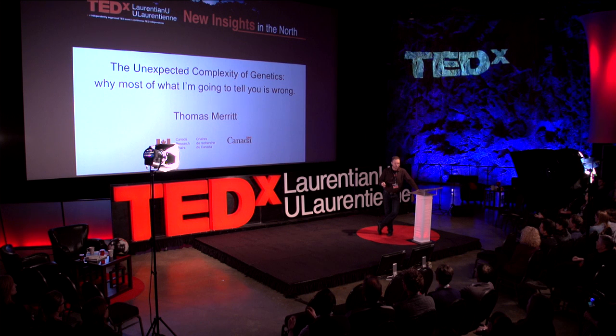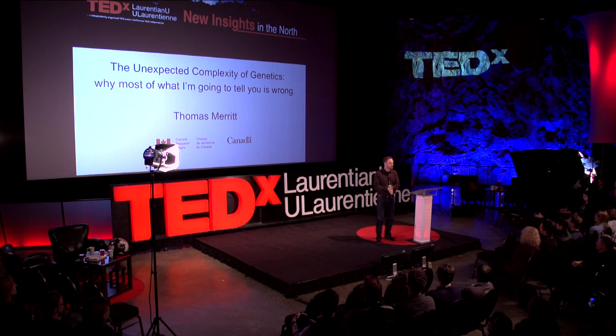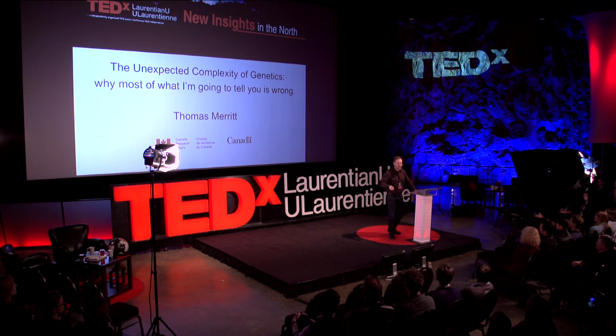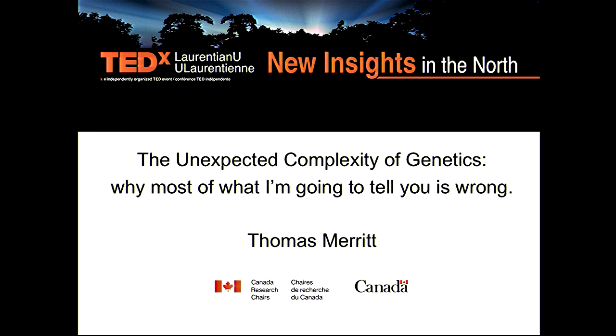In 2001, we published the first draft sequence of the human genome, and one of the first things that we found was that there were too few genes — a lot too few genes. Based on the complexity of us, we had estimated there would be about 100,000 packets of information, about 100,000 genes. And we found 25,000 genes. We were off by a factor of four. We knew we wouldn't get it exactly right, but we didn't think we'd be that wrong.